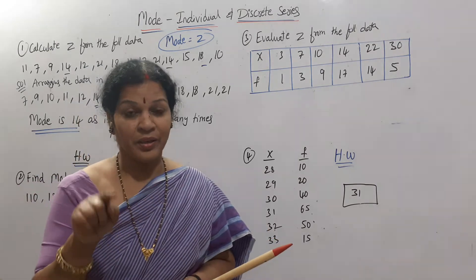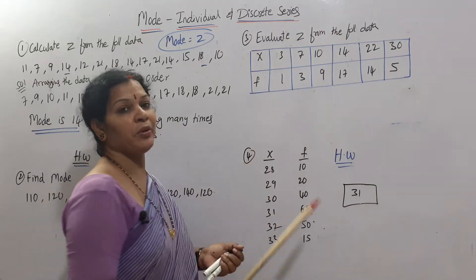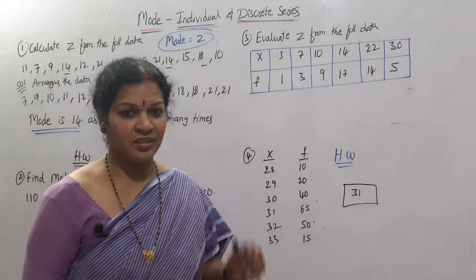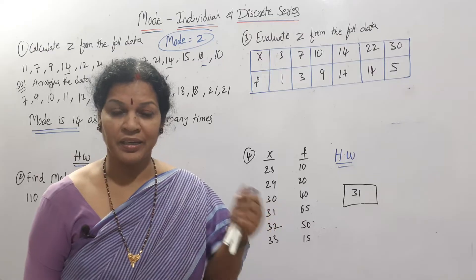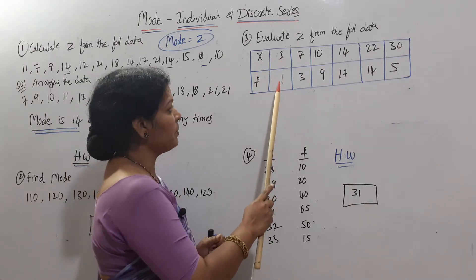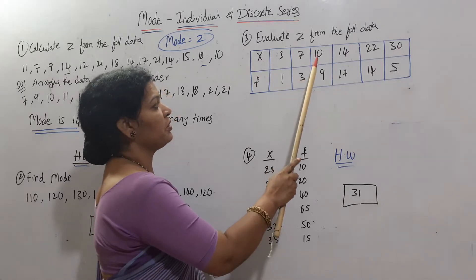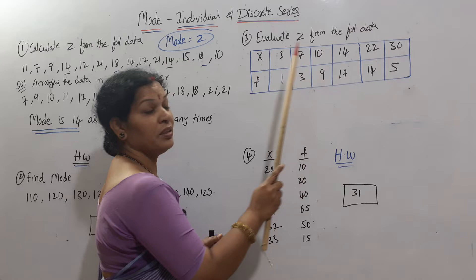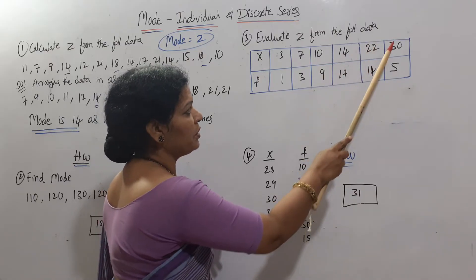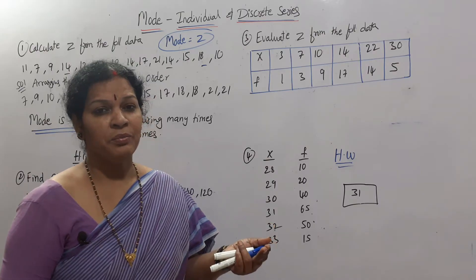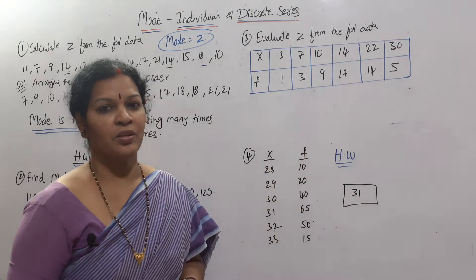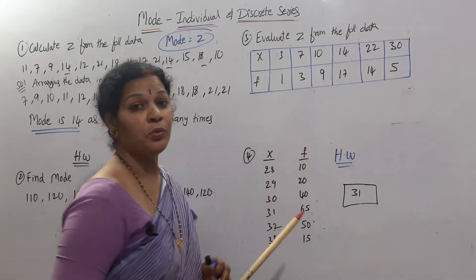How do you identify discrete series? X is given and also frequency is given. Evaluate z from the following data: x values and frequencies are given. In discrete series also, the mode is the most frequently occurring number. First value 3 is repeating one time, 7 is repeating 3 times, 10 is repeating 9 times, 14 is repeating 17 times, 22 is repeating 14 times, 35 is repeating 5 times. Which number repeated many times? Obviously, 14 is repeated 17 times, so mode is 14.